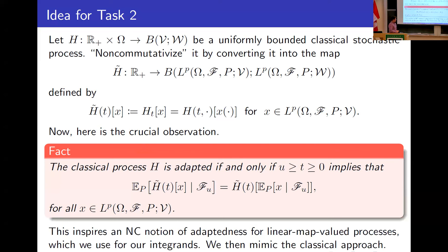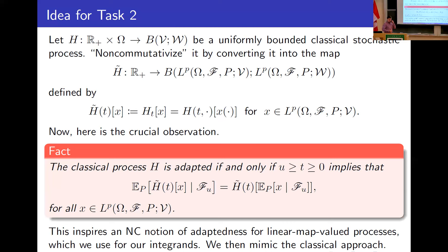This characterization inspires a non-commutative notion of adaptedness for linear-map-valued processes where the linear maps are between non-commutative L^p spaces. We use such adapted linear-map-valued processes as our integrands in stochastic integrals. This allows us to somewhat mimic the classical approach, which uses an identity called Itô isometry. David will tell you about how our non-commutative construction goes.